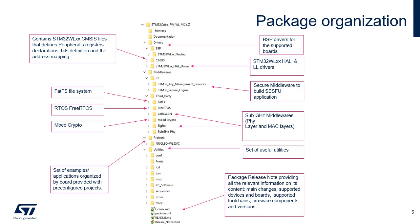CMSIS contains the files defining STM32WL-XX-supported devices, peripheral register declarations, their associated bit definitions, and address mapping. The STM32WL-XX HAL driver folder contains the drivers for all the peripherals. The drivers for all supported boards are found in the BSP folder. Middleware contains the supported middleware libraries and stacks, provided either by ST or third parties. The Projects folder contains templates, examples, applications, and demonstrations for supported boards, with pre-configured projects and specific README files that provide all necessary information for a quick and easy execution. The Utilities folder contains miscellaneous utility drivers used by the provided projects.